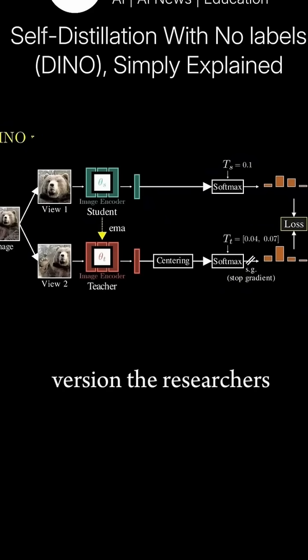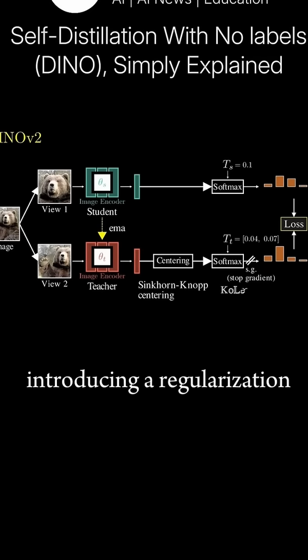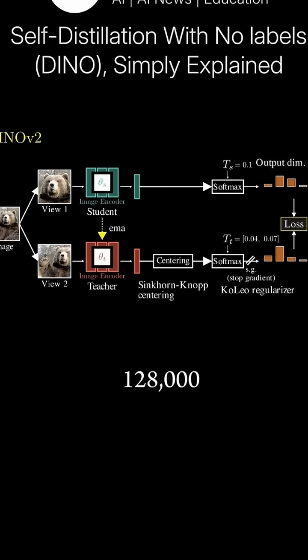In the second version, the researchers enhanced the method by implementing a better censoring technique for the logits, introducing a regularization term to encourage more diverse feature learning, and expanding the output dimensions to 128,000.